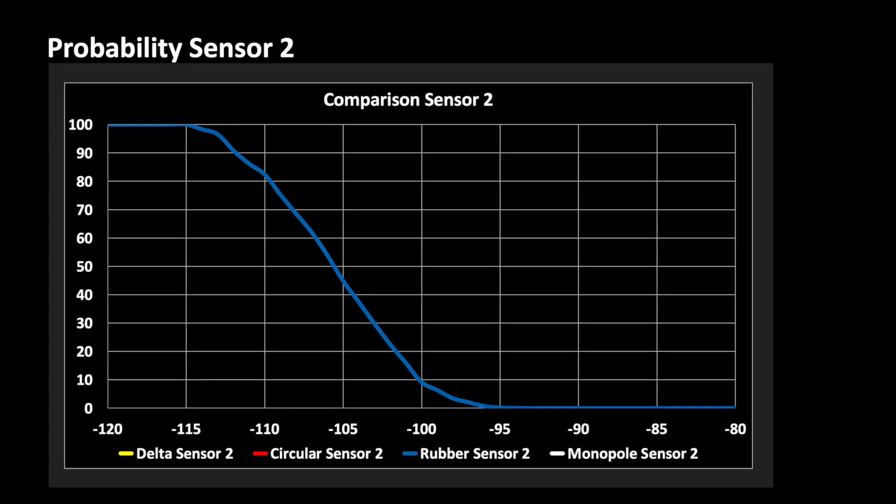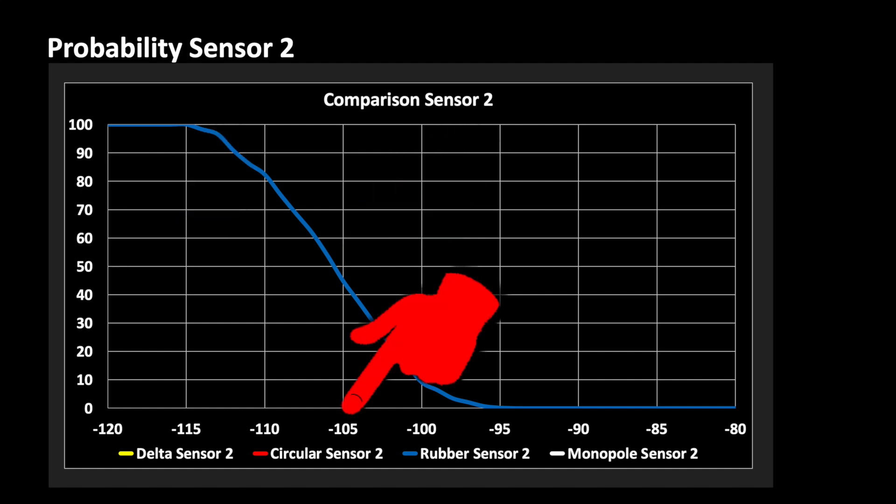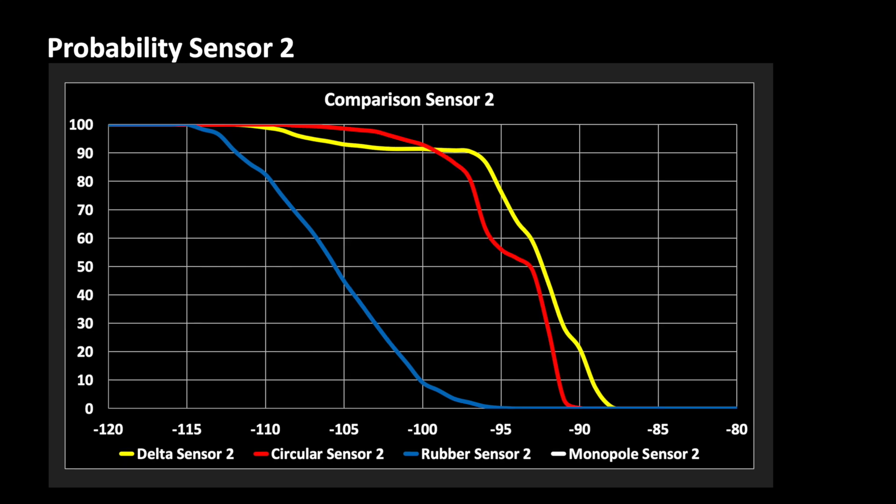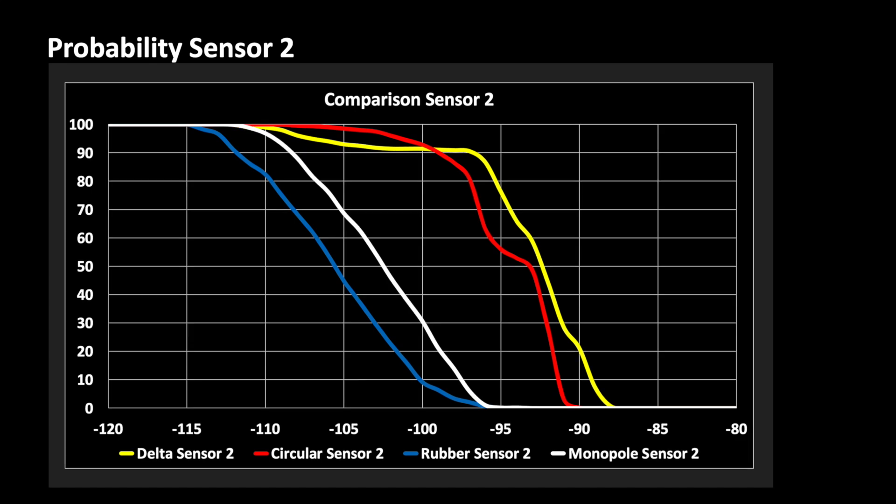This graph is showing the probability for signal strength being above a certain level. The further the curve to the right, the better the quality of the radio channel. The loop's performance is significantly better than the commercial rubber coil, while the monopole antenna is somewhere in between.